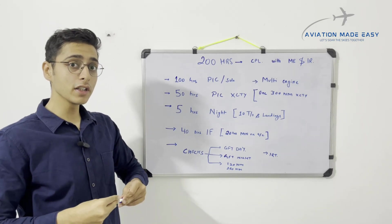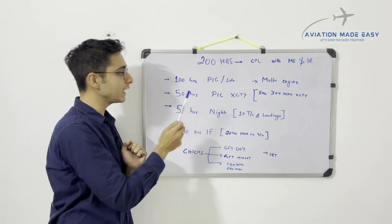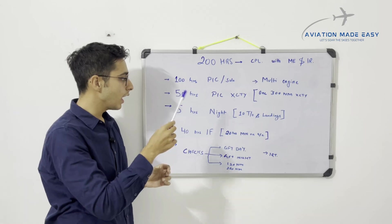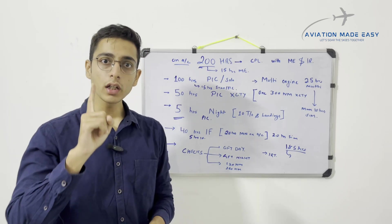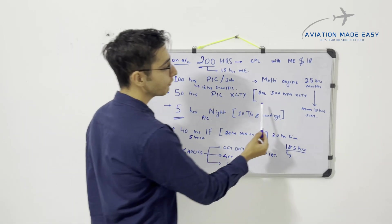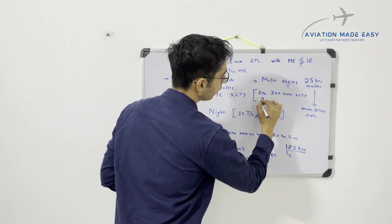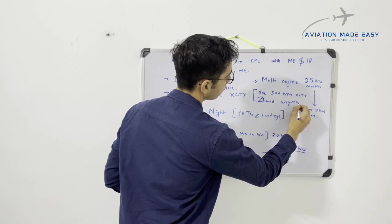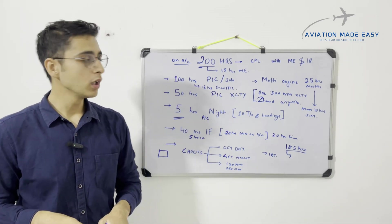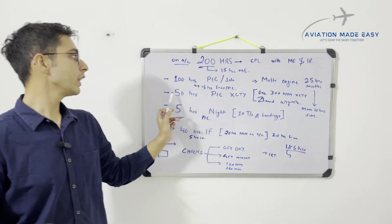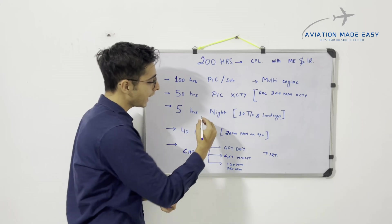Out of those 100 hours of PIC solo, 50 hours must be PIC cross-country — meaning flights where the first straight leg is greater than 100 nautical miles. Additionally, you must conduct one cross-country flight of at least 300 nautical miles, landing at two different airports other than your departure aerodrome. You also need five hours of night PIC within those 50 hours.